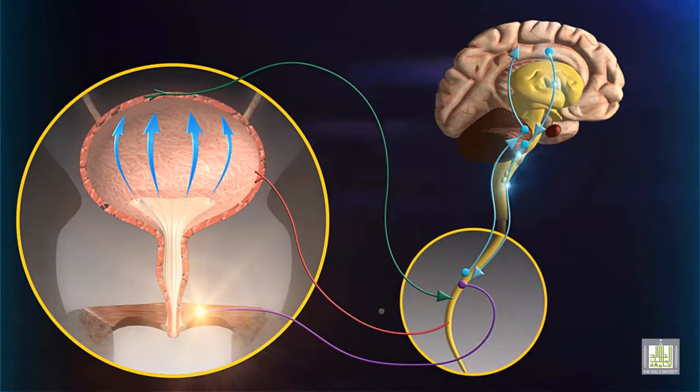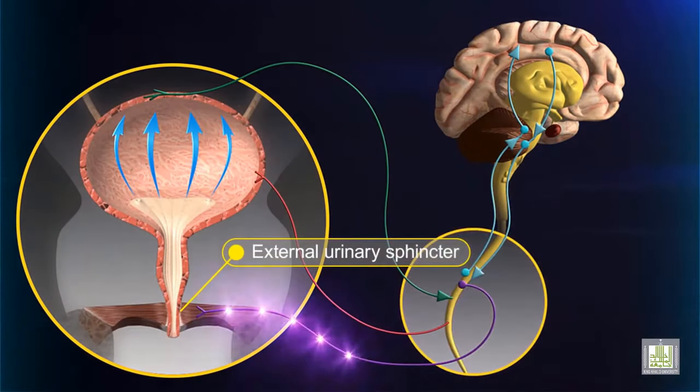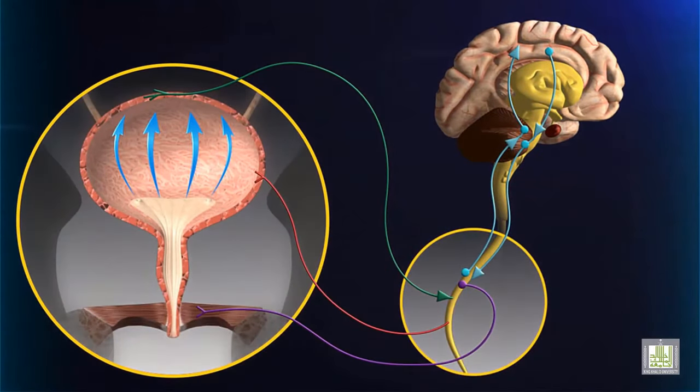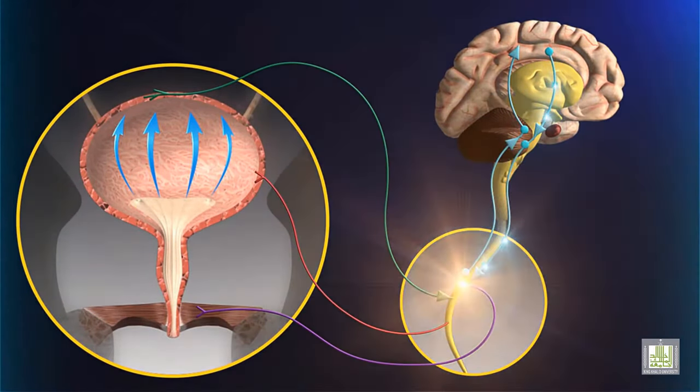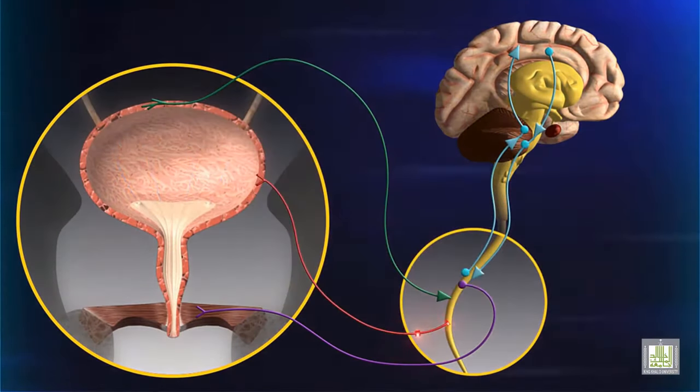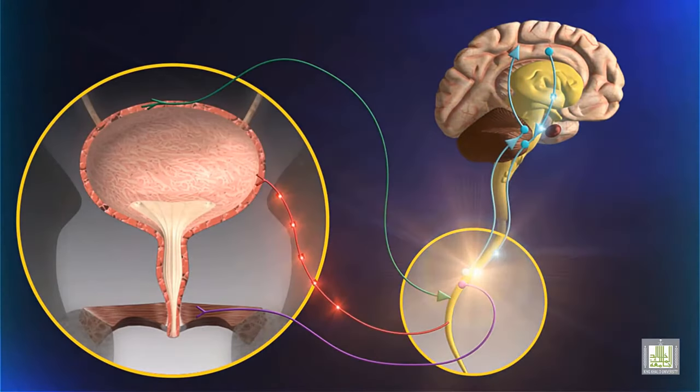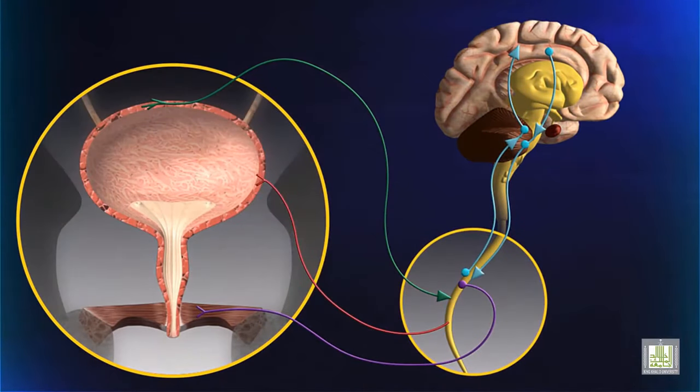Impulses carried via somatic motor neurons keep the external urinary sphincter contracted, which also prevents urination. When urination is desired, signals from the brain stimulate the micturition reflex. The brain also decreases action potentials in the somatic motor neurons to relax the external urinary sphincter.